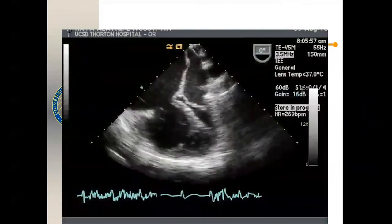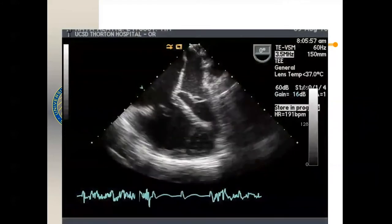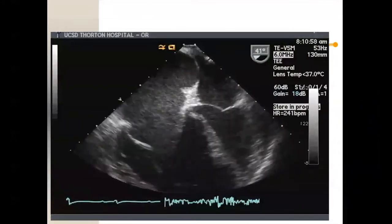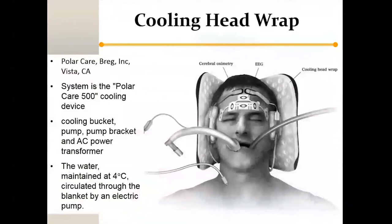One of our intraoperative echoes shows again the massive right atrium and right ventricle squishing the left atrium and left ventricle. Another important aspect during anesthesia is setting up for brain protection. The brain is the index organ during circulatory arrest. Monitor with near-infrared spectrometry and EEG to ensure the EEG is completely suppressed prior to circulatory arrest. We use a cooling wrapping unit — originally made for knees — that circulates water at 4 degrees Celsius to keep the head nicely cold.